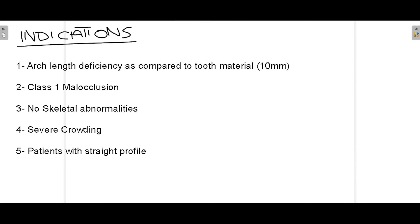Now talking about indications where serial extraction can be performed: the first is when the arch length in the maxilla or mandible is less compared to the tooth material — meaning there is more tooth material than arch space, so the arch cannot accommodate all of the teeth, resulting in crowding.